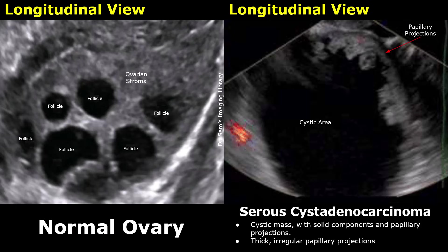In this image, we see a large anechoic cystic area which does not have internal echoes — it has a clear black color. Thick, irregular papillary projections are noted as well. This irregularity suggests malignancy. You can also see some color Doppler signals in the papillary projections.